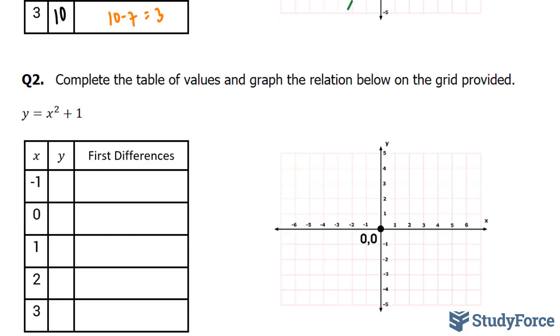Let's move on to the next question. In the next question, they ask us to complete the table of values and graph the relation below on the grid provided. The equation is y is equal to x squared plus 1. So once again, I'll use my calculator to input all of these x's to find my y.